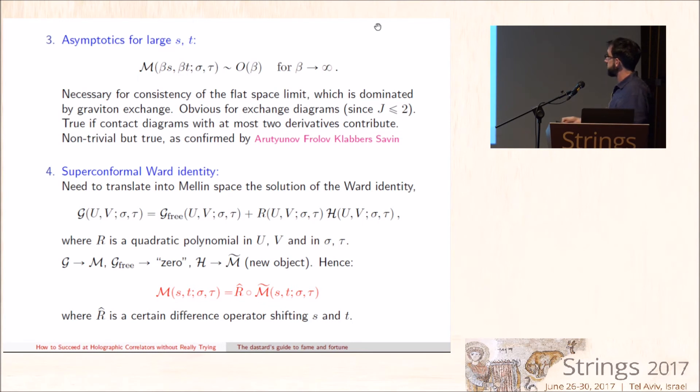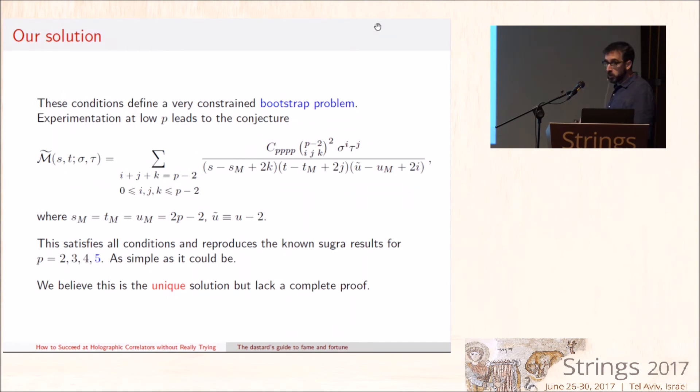The least trivial constraint and the crucial one is the superconformal Ward identities. This was the identity in position space. We can Mellin transform it. G goes to M. The free part essentially only contributes some delta functions, and then we introduce a new auxiliary object, which is M̃, which is the Mellin transform of the dynamical function H. Then the fact that this R, which was just some simple quadratic polynomial in U and V should give us G, translates into Mellin space into a statement that the actual amplitude that we want is obtained by acting with a certain difference operator that shifts S and T on M̃. This is the real non-trivial constraint because the fact that the difference operator, acting on M̃, should give us the simple pole structure we had earlier is very hard to solve, and in general has no solutions. So you should feel lucky if you find any solution at all.